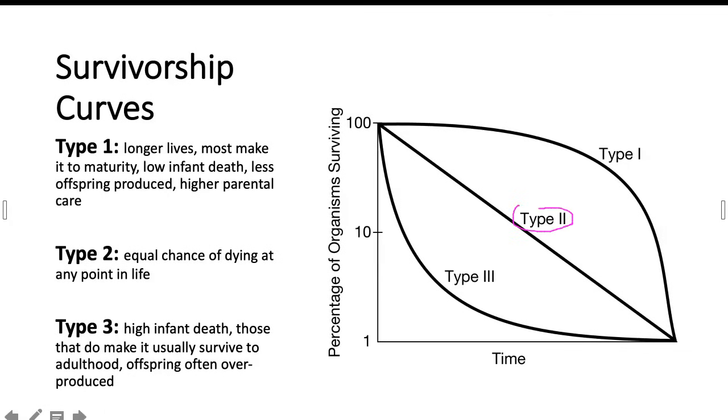Then we see our type 2 populations, which are going to show pretty much an equal chance of dying throughout their lifespan. So if you notice, we just have kind of this downward drop here. This means they may be infants, they may be older, or they may be adults in the middle of their life. They have just as equal a chance of dying at any given point. So this is common in birds.